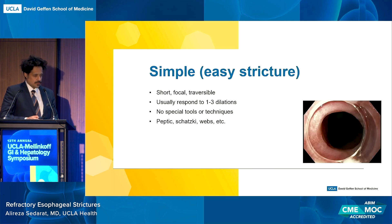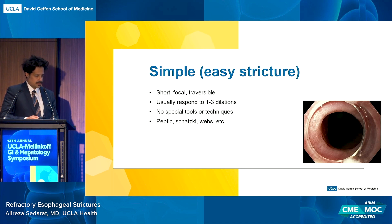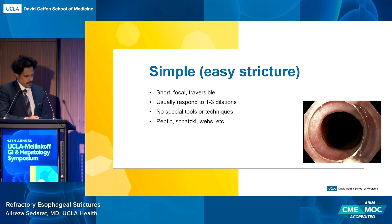Most strictures are probably easy. They're defined as simple by being short, focal, traversable with the endoscope. They generally respond to a few sessions of standard dilation. They're often minor peptic strictures, Schatzky's rings, or benign webs, and they look like a little focal ridge or a web — a little Schatzky's ring.